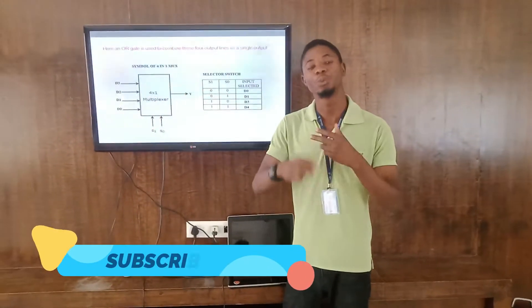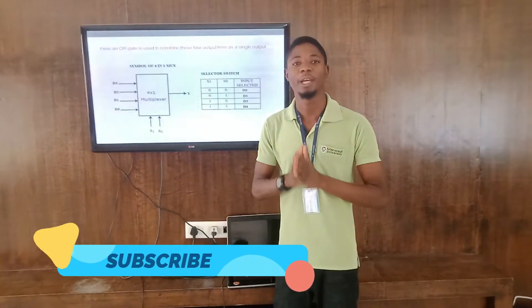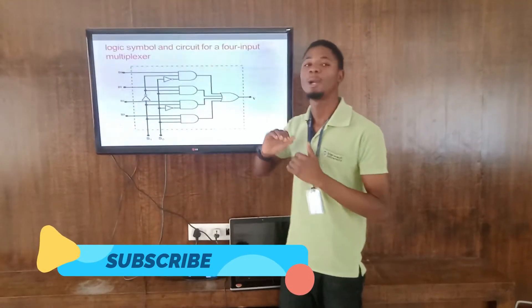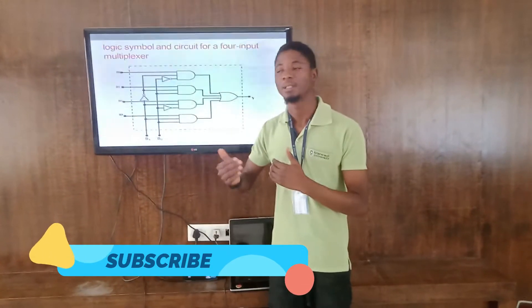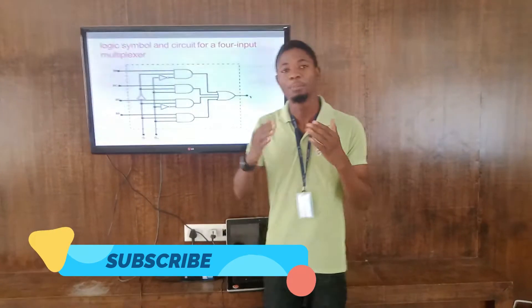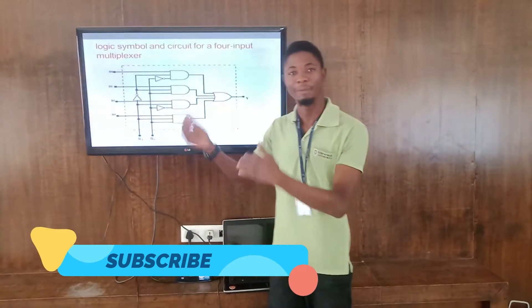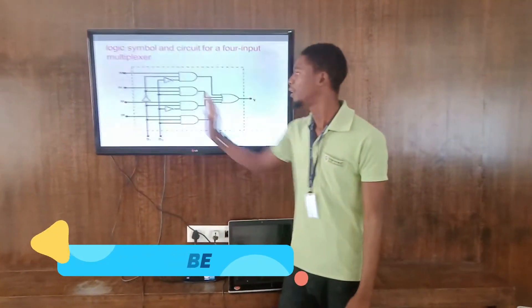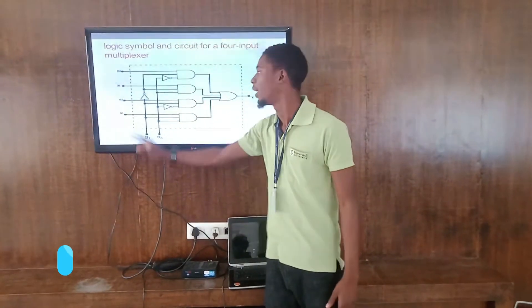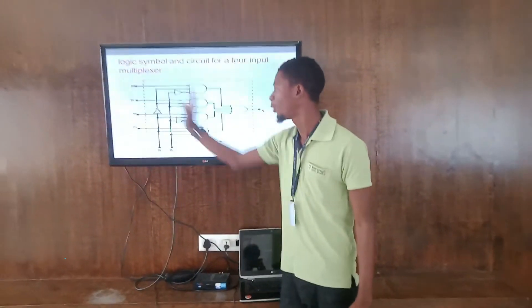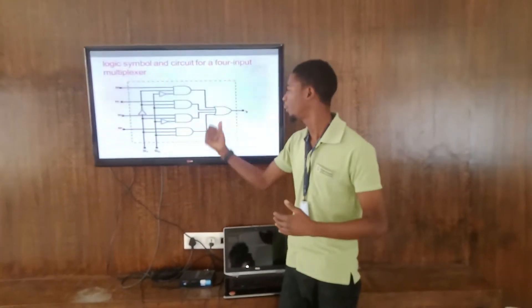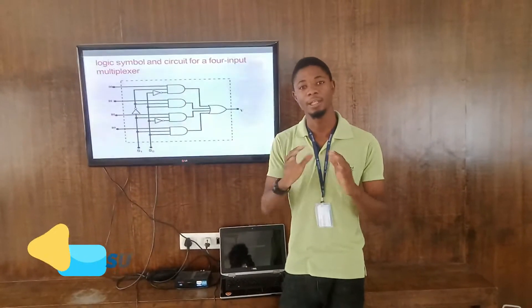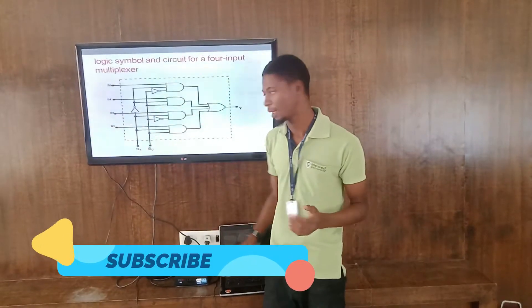All of this goes on and repeats simultaneously so all subscribers receive accurate information. This is the logic symbol of the circuit we have been discussing — these represent the subscribers, this is the logic that happens behind it, and we get the input on one single line and it is accurately delivered as predicted.